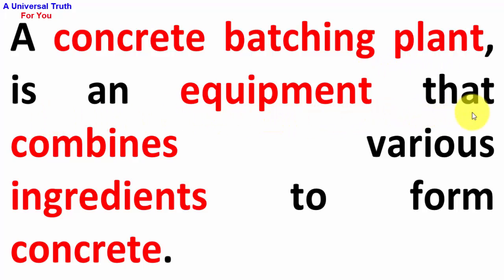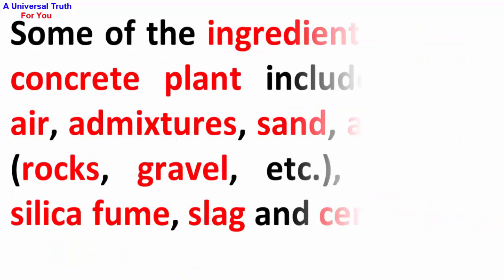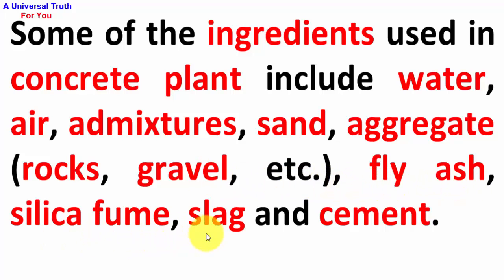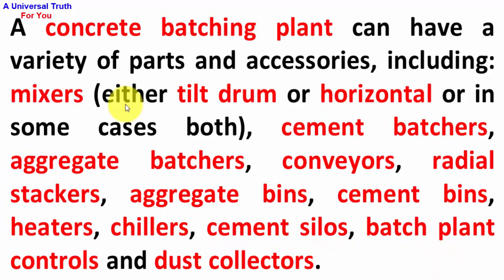A concrete batching plant is an equipment that combines various ingredients to form concrete. Some of the ingredients used in a concrete plant include water, air, admixtures, sand, aggregate (such as rocks and gravel), fly ash, silica fume, slag, and cement.